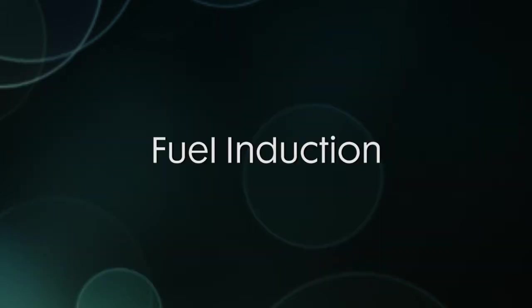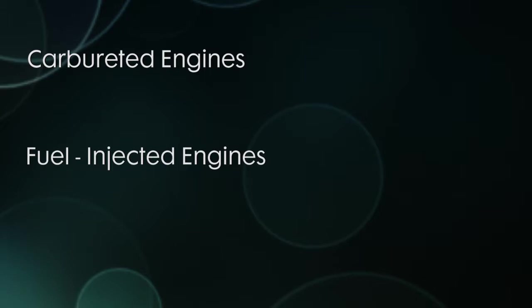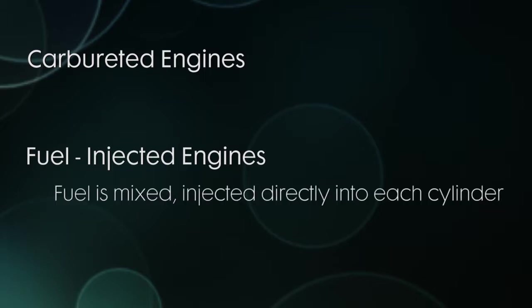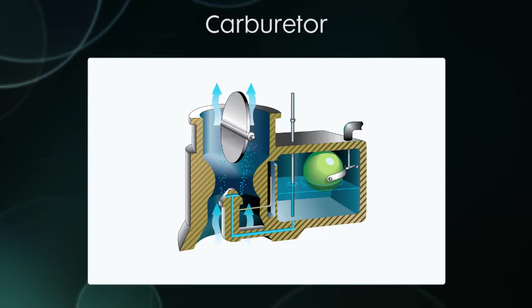The way fuel gets to the engine can be either via a carburetor or fuel injection. Fuel injected engines deliver the fuel and air mixture right to each cylinder. In a carbureted engine, the fuel and air mix inside the carburetor. Here's a picture of a carburetor.